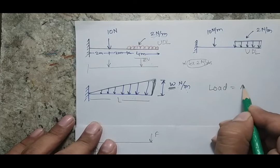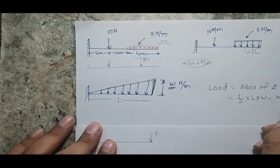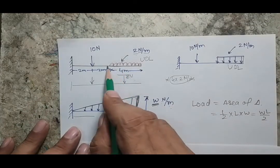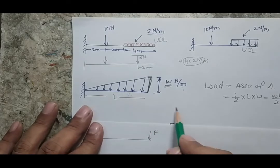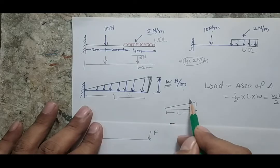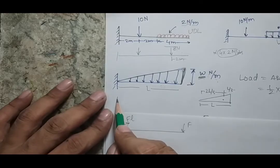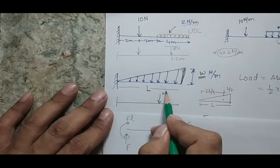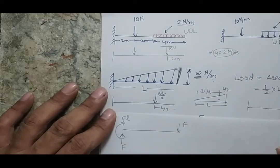To find the equivalent single load for a triangular distributed load, we calculate the area of the triangle: total load = (1/2) × L × W = WL/2. The load acts at the centroid of the triangle. For a triangle, the centroid is at L/3 from the maximum-load side and 2L/3 from the zero-load side.